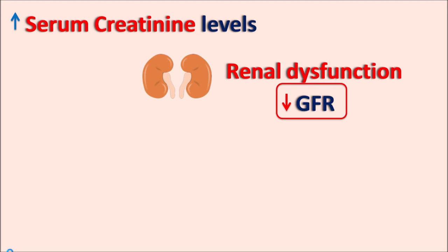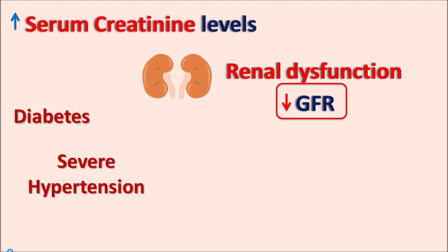Elevated serum creatinine can be seen in conditions like diabetes, where uncontrolled glucose levels may produce diabetic nephropathy over a prolonged period. Severe hypertension over several years may lead to increased renal perfusion pressure and increased workload on the renal system. Nephrotoxic drugs such as NSAIDs, immunosuppressants like cyclosporine and tacrolimus, anti-cancer agents like cisplatin, and antifungal agents like amphotericin B can also reduce renal function.